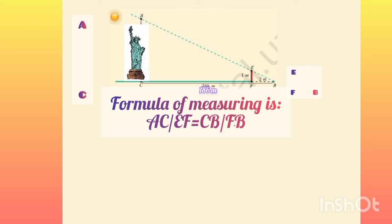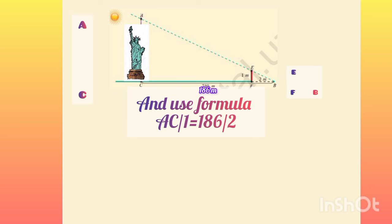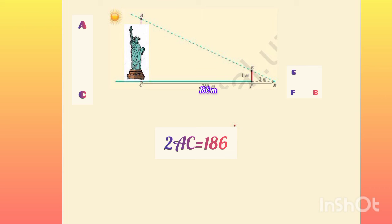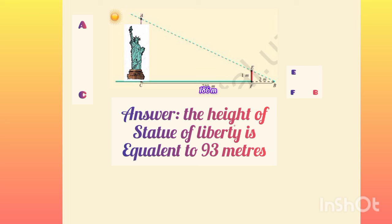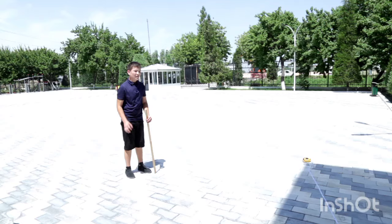The formula for measuring is AC divided by EF equivalent to CB divided by FB. And use formula AC divided by 1 equivalent to 186 divided by 2. AC equivalent 186 divided by 2, AC equivalent 93. Answer: The height of the statue of liberty is equivalent to 93 meters.